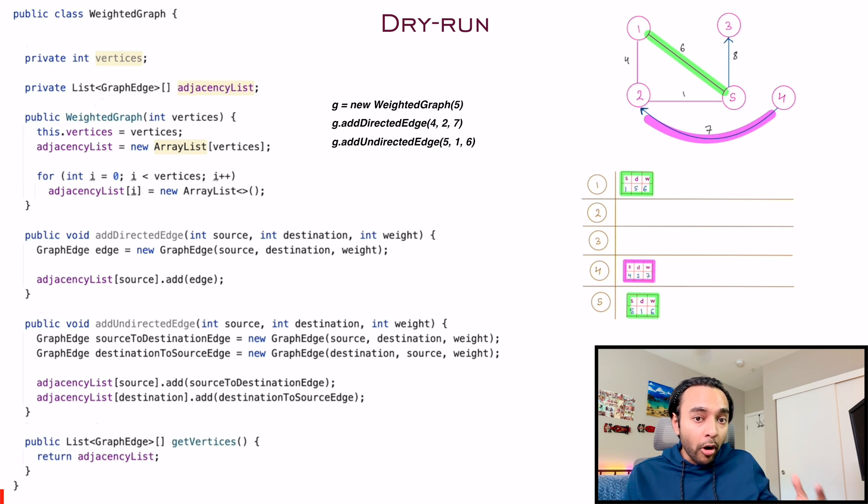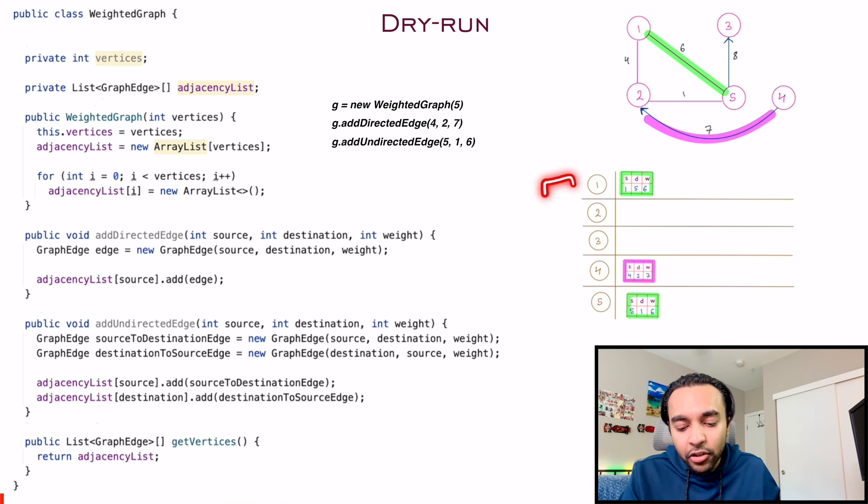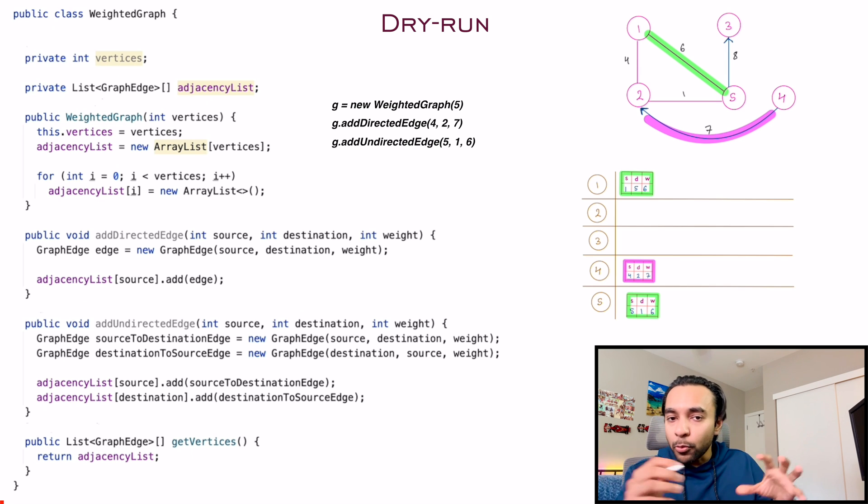And once you want to perform operations, you can just call the method get vertices and it will return you your complete adjacency list which is representing the graph. I would also recommend that you check out my complete code on GitHub which has additional method to remove an edge as well.